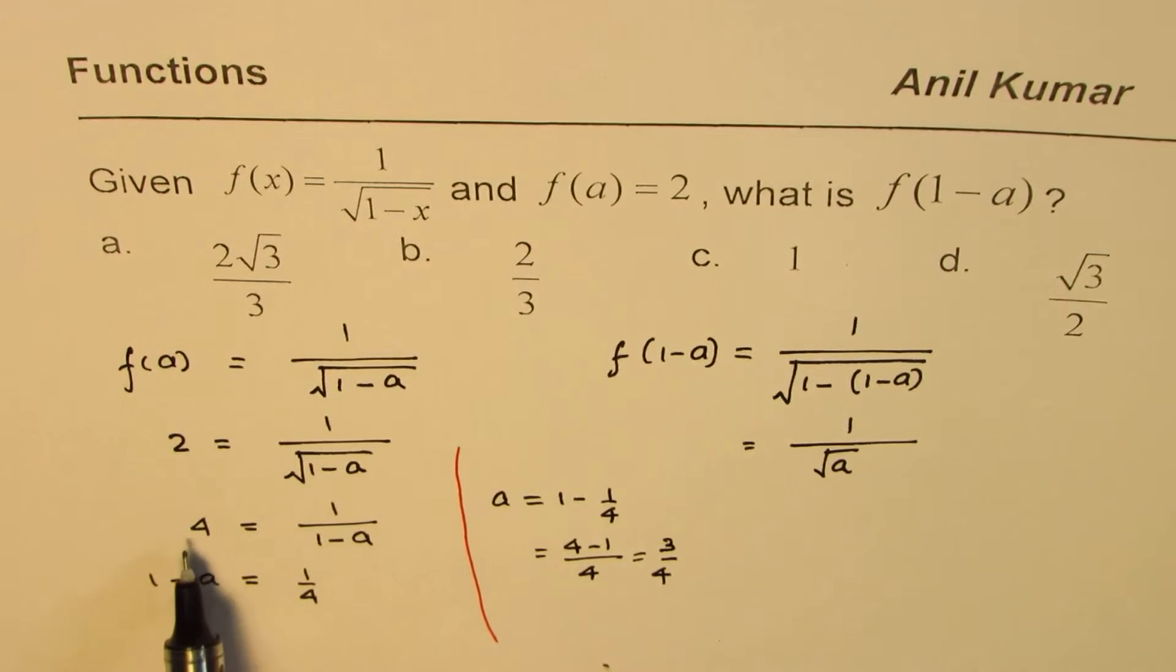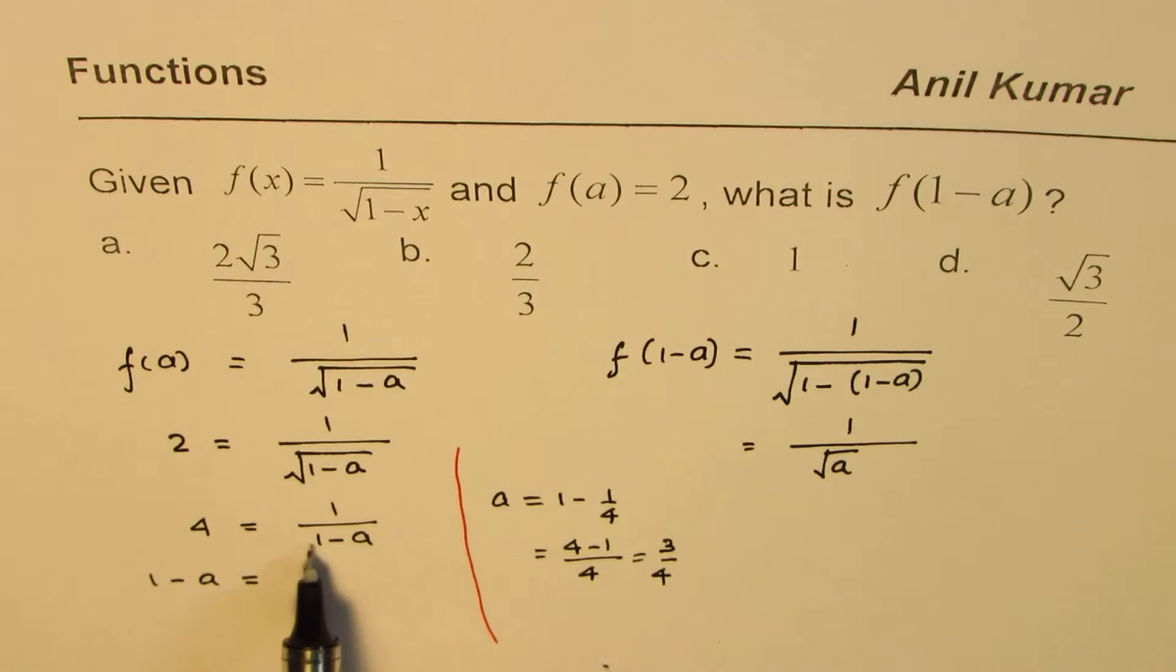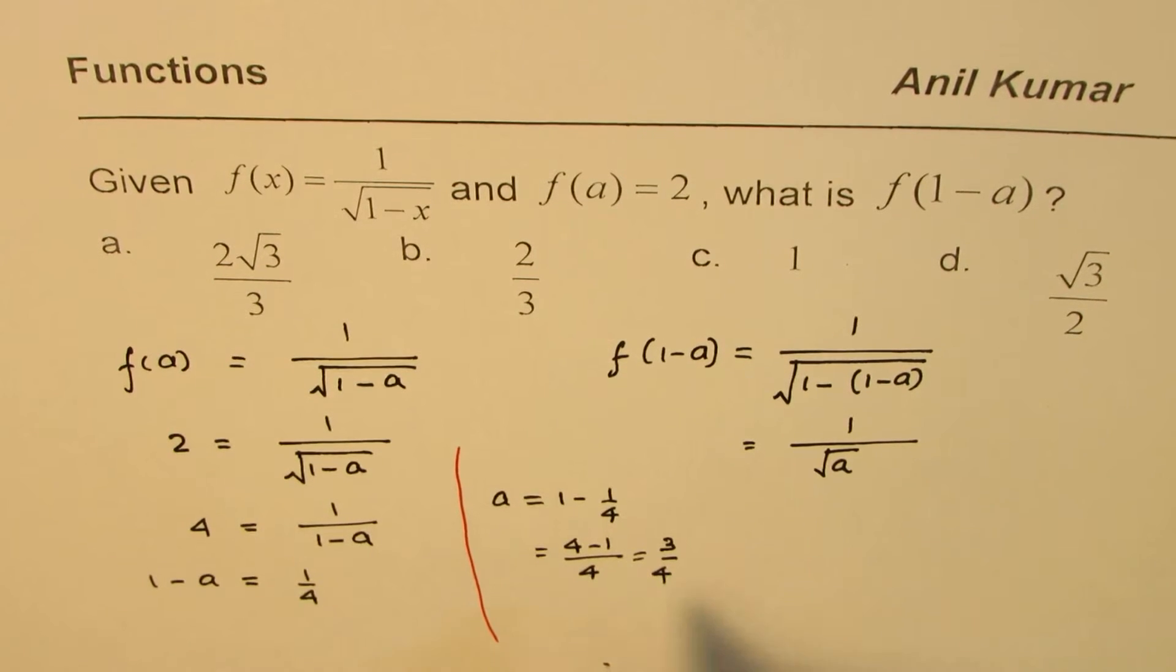You could actually cross multiply 4 times 1 minus a equals to 1, and then also do it, getting the same result. Anyway, so that gives you the value of a.